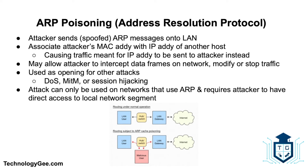ARP poisoning, or Address Resolution Protocol poisoning, is a technique by which an attacker sends spoofed ARP messages onto a LAN. The aim is to associate the attacker's MAC address with the IP address of another host such as the default gateway, causing any traffic meant for that IP address to be sent to the attacker instead. ARP spoofing may allow an attacker to intercept data frames on the network, modify the traffic, or stop all traffic. Often the attack is used as an opening for other attacks such as denial of service, man in the middle, or session hijacking. The attack requires the attacker to have direct access to the local network segment.